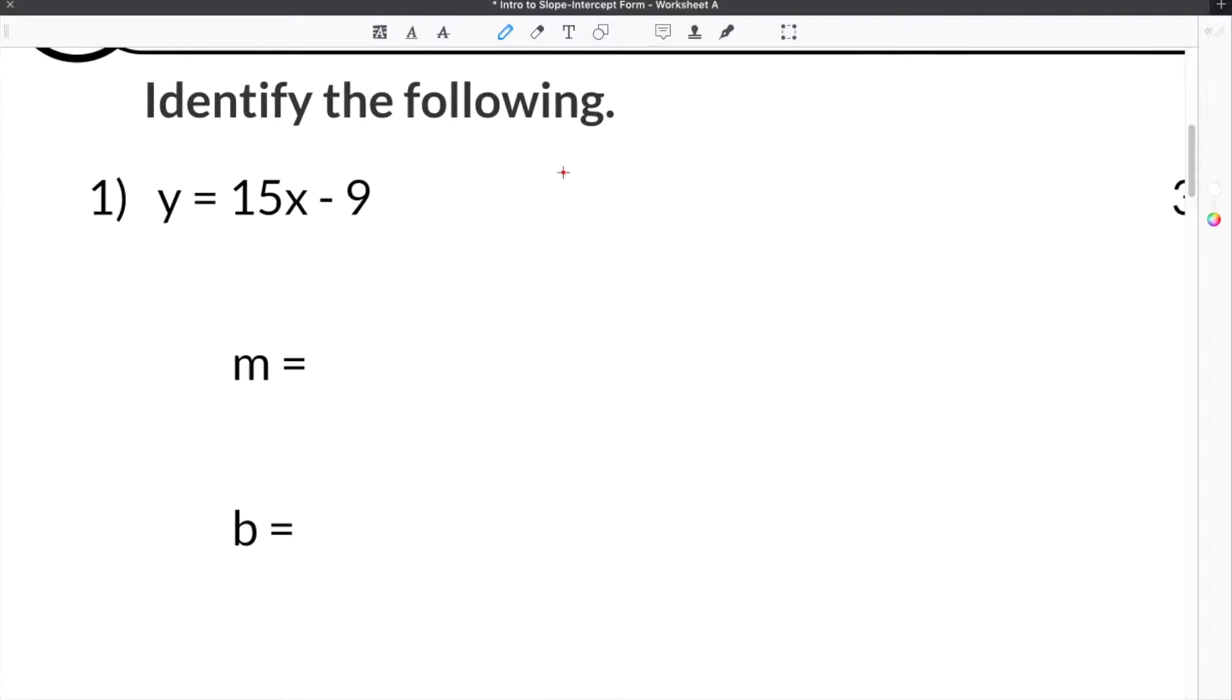Here we are at the first problem on our slope-intercept form worksheet. The first problem asks us to identify what M is and what B is. In terms of slope-intercept form, you have to first know that slope-intercept form is written as Y equals MX plus B. M is the slope, or what represents the slope, and B is the Y-intercept.